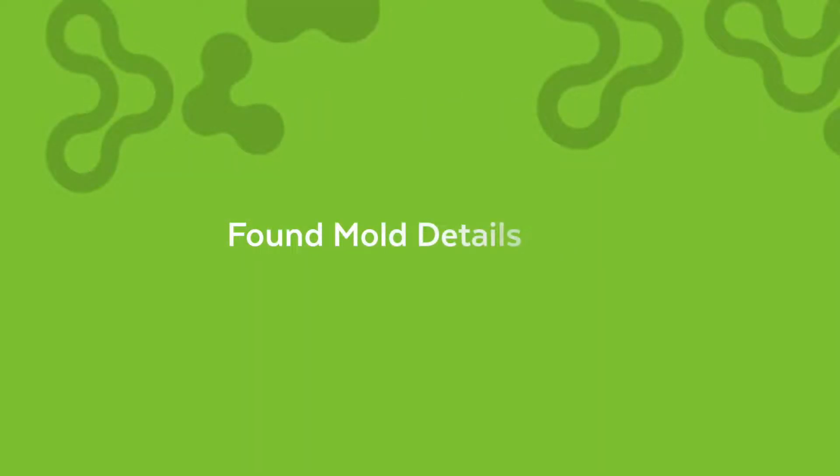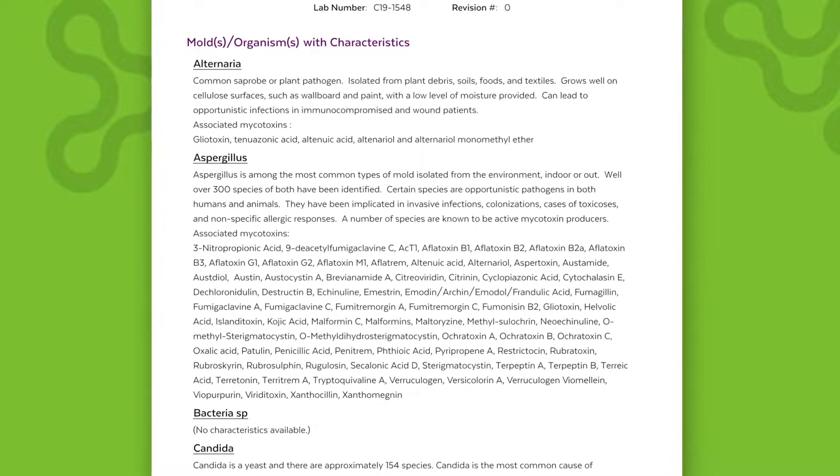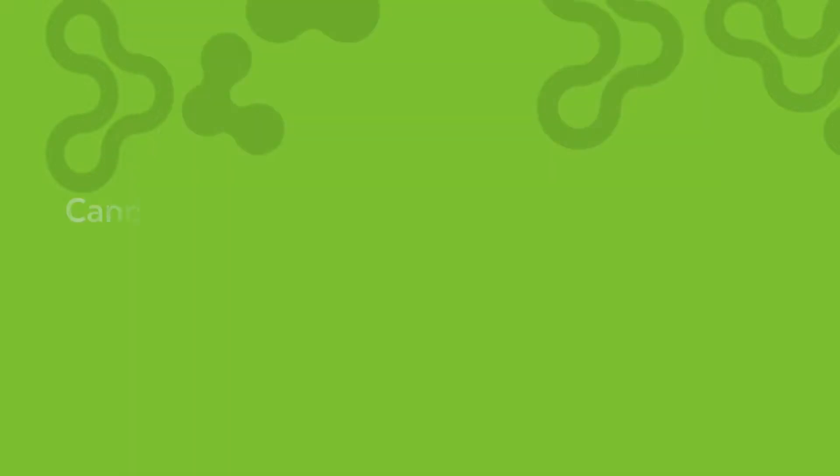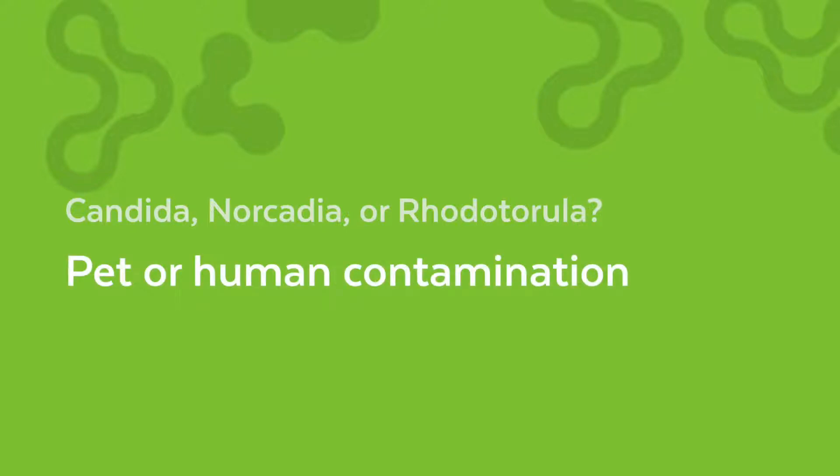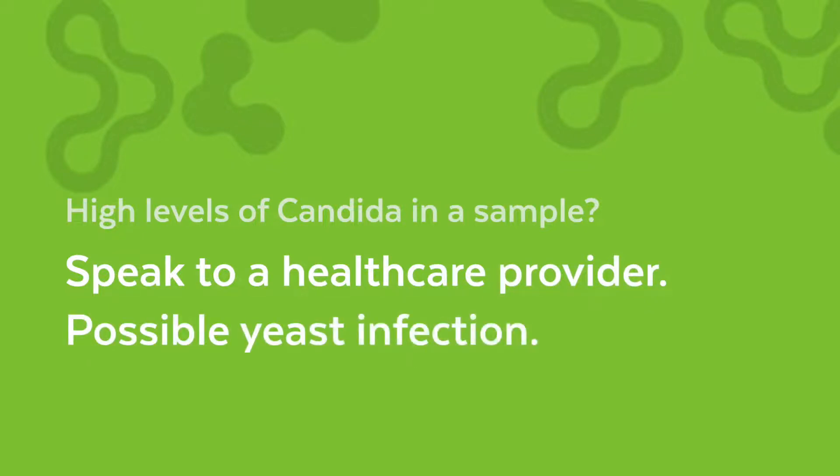The final pages of your report list the mold that was present with a description of that mold and where they're commonly found. For example, if Candida, Nocardia or Rhodotorula is found, those are usually indicative of pet or human contamination. If Candida in high levels are found in any of your samples, you may want to talk to your health care provider as it might be an undiagnosed yeast infection.